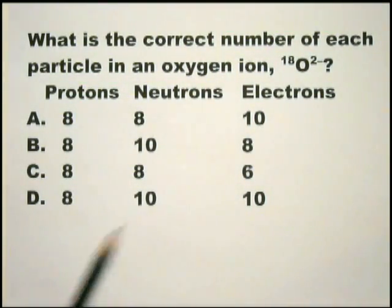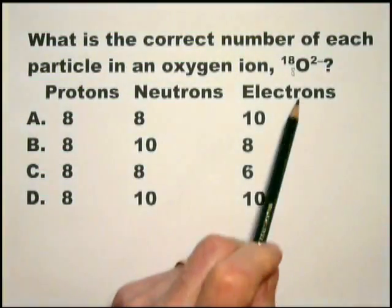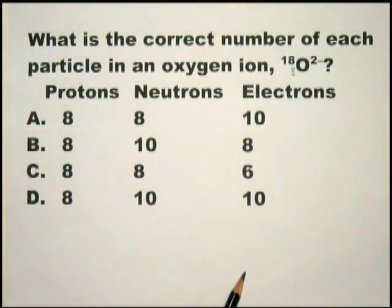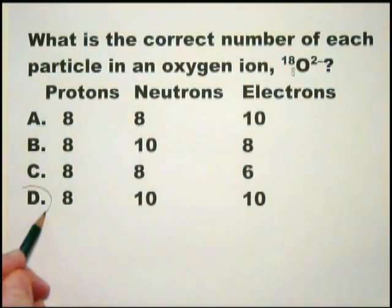The second thing to know is that if there are 8 protons, we'll put the 8 there. The difference between the 8 and the 18 is the number of neutrons. Therefore the number of neutrons is 10 and the answer is going to be D. If you're having difficulty with this kind of question, what I would suggest is you take the periodic table.